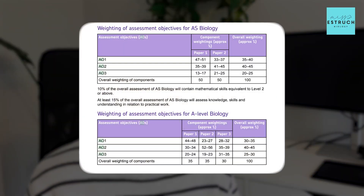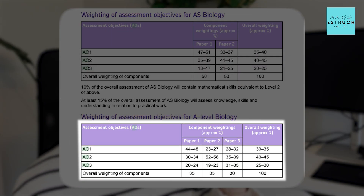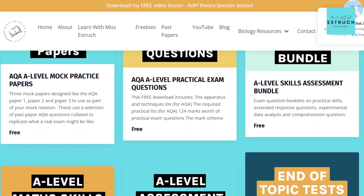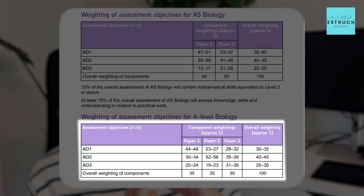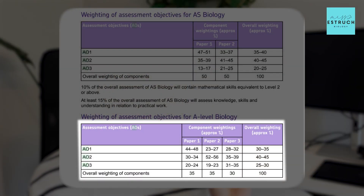For all of the papers, it tells you what proportion of paper one will be AO1, AO2, AO3, then the same for paper two and paper three. For paper two in particular, you can expect 52 to 56% of the questions — so over half of the paper — to be AO2, which means over half of paper two is going to be application questions. You need to know that so when you're planning your revision, you spend at least half of the time doing practice questions, in particular application questions. Paper three has up to about 35% AO3 questions, so it's more of a practical and analysis focus. Paper one and paper two are worth 35% each and paper three is only worth 30%.